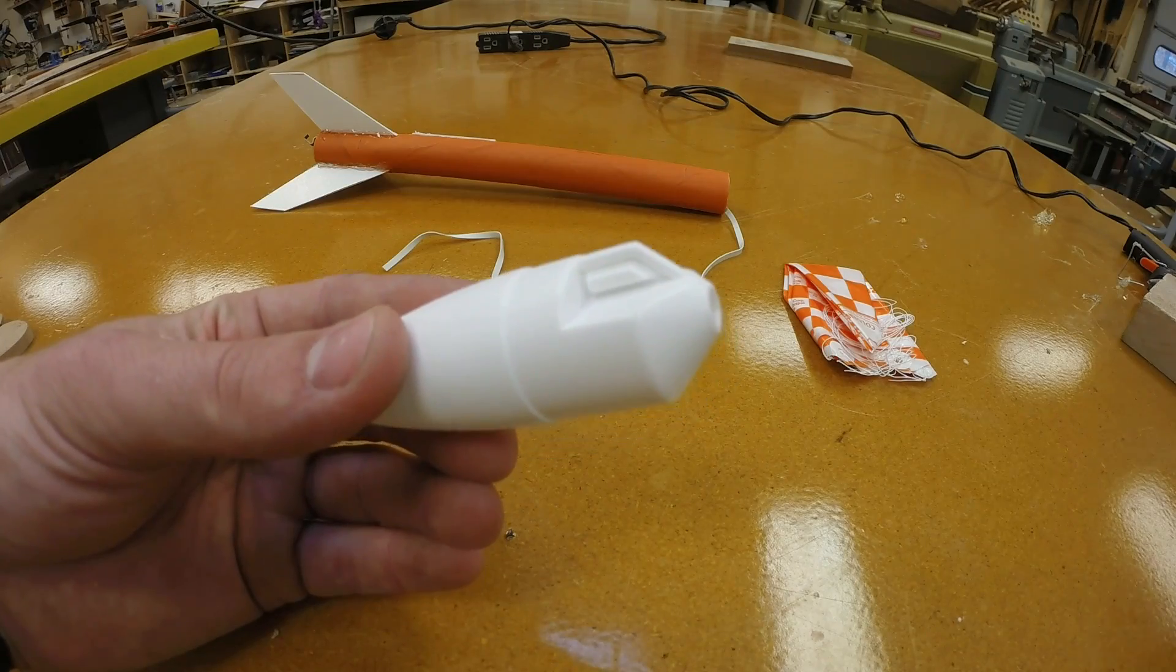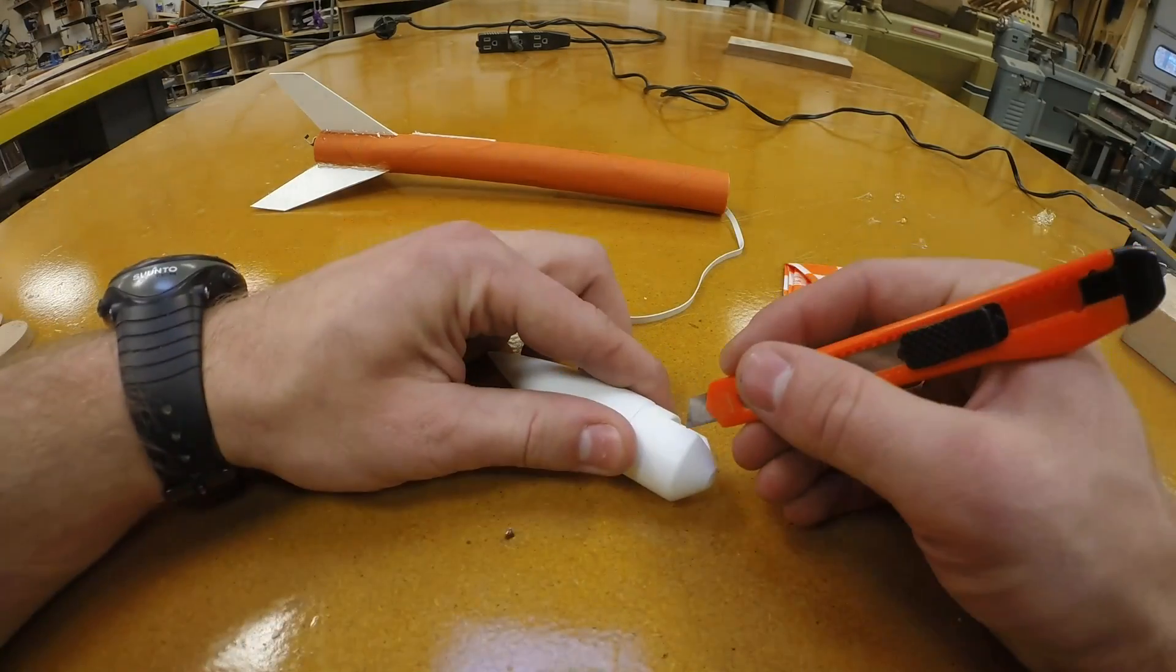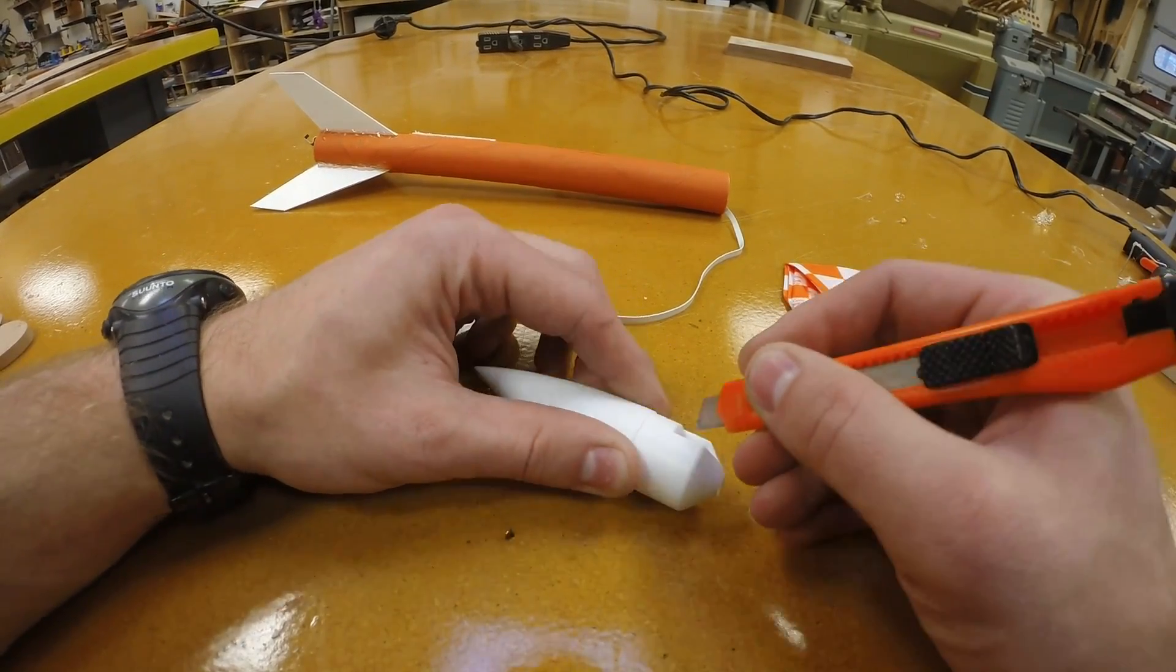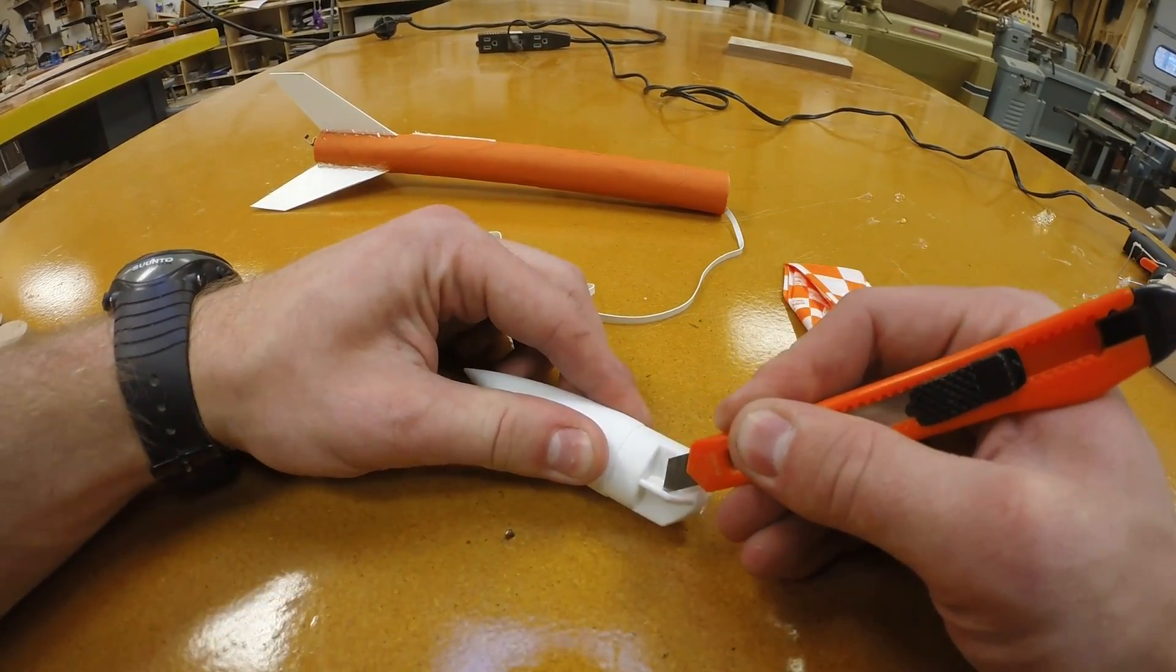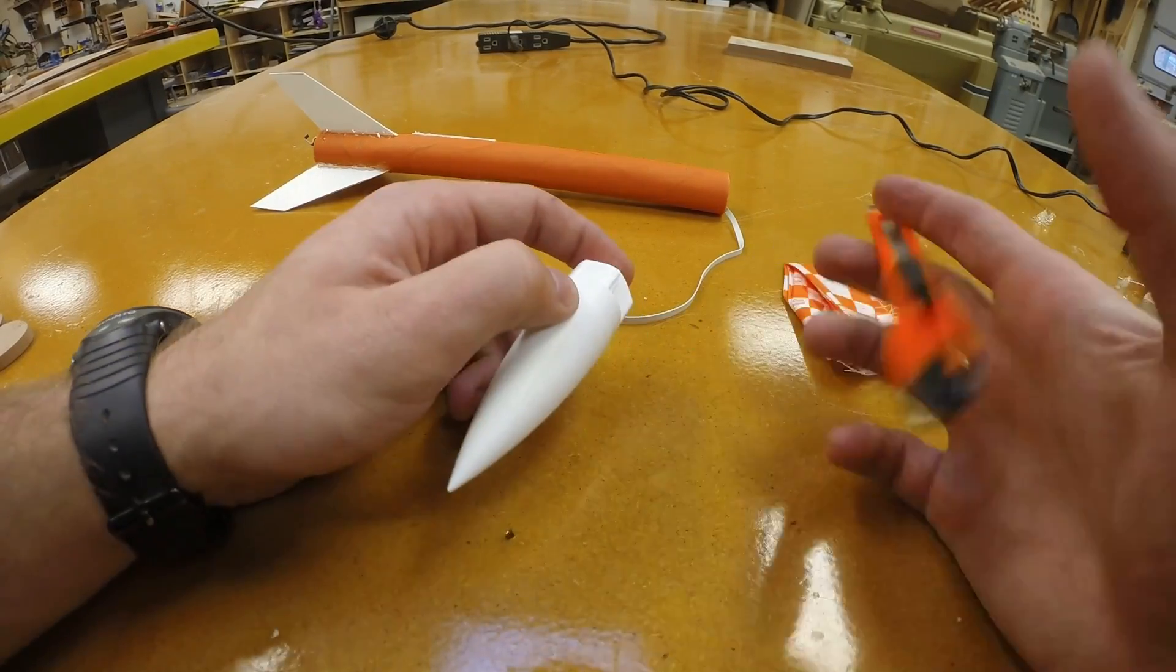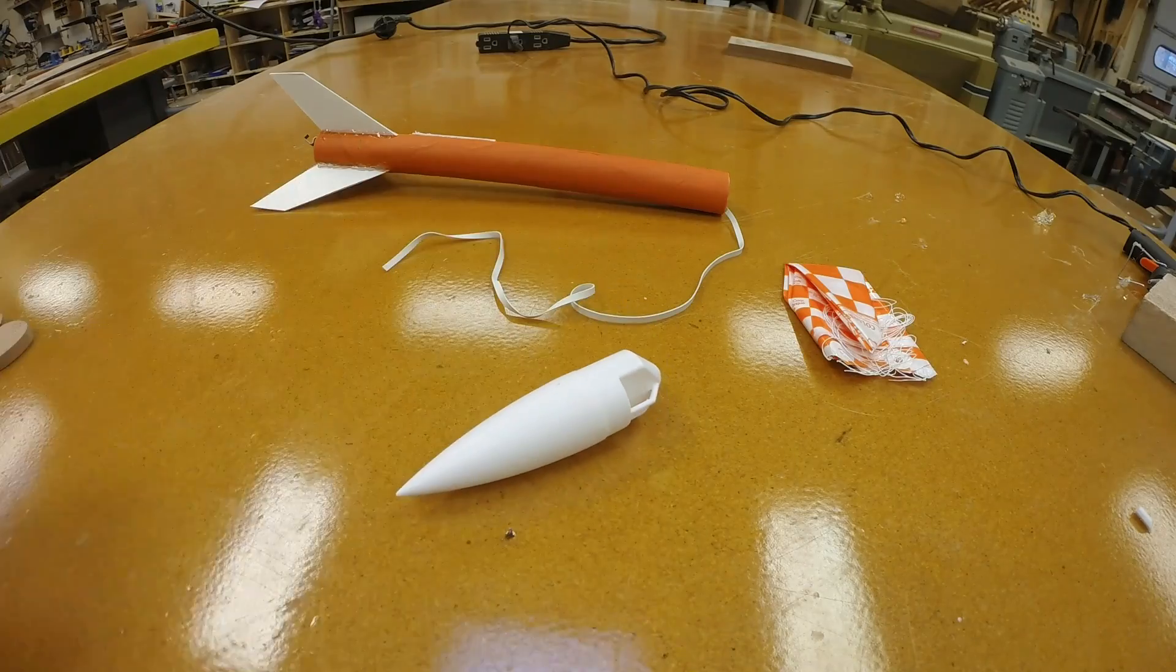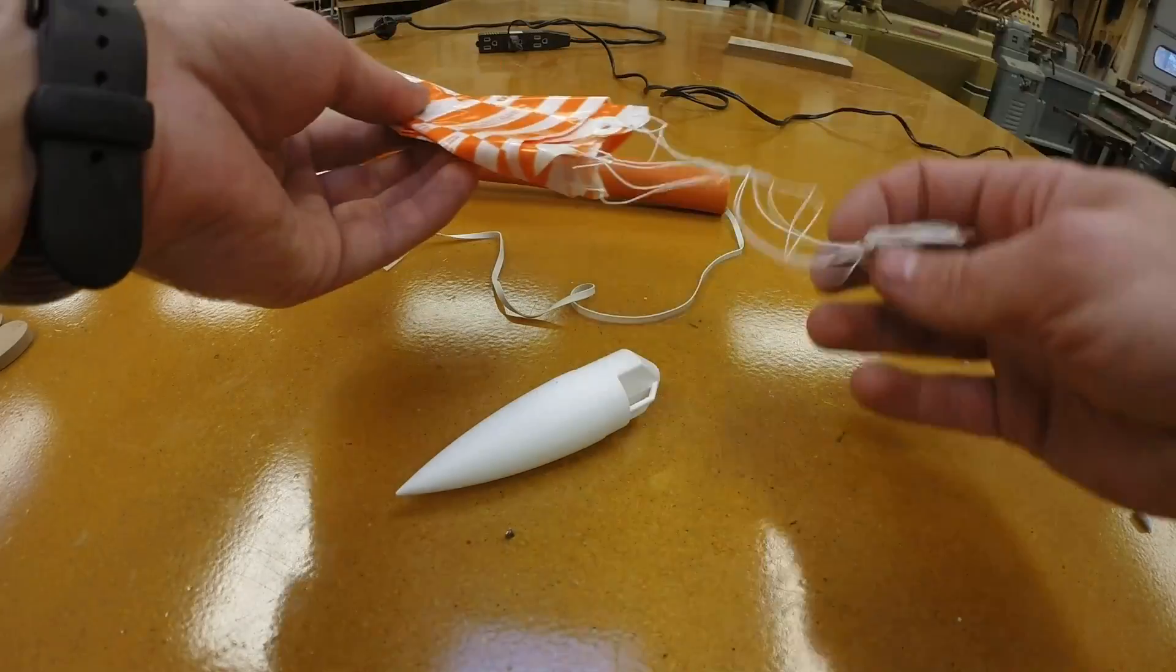Next we need to run the parachute through the nose cone. Your nose cone might have the hole blocked by a piece of plastic so you're going to very carefully use a hobby knife to cut this piece of plastic out of there. Be very careful not to cut open the eyelet on the nose cone or your fingers.